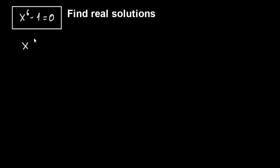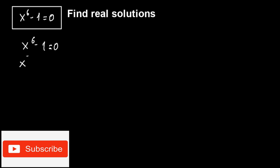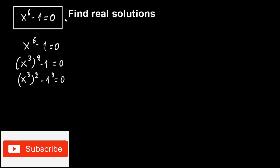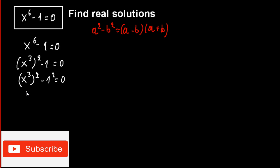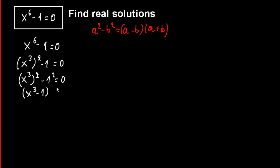So we have that x raised to the 6th power minus 1 equals to 0. We can write x to the 6th power as x to the 3rd power squared, giving us (x³)² minus 1² equals 0. Here we have the form a² minus b² equals (a minus b) times (a plus b), so if we apply this we get x to the 3rd minus 1 times x to the 3rd plus 1 equals to 0.